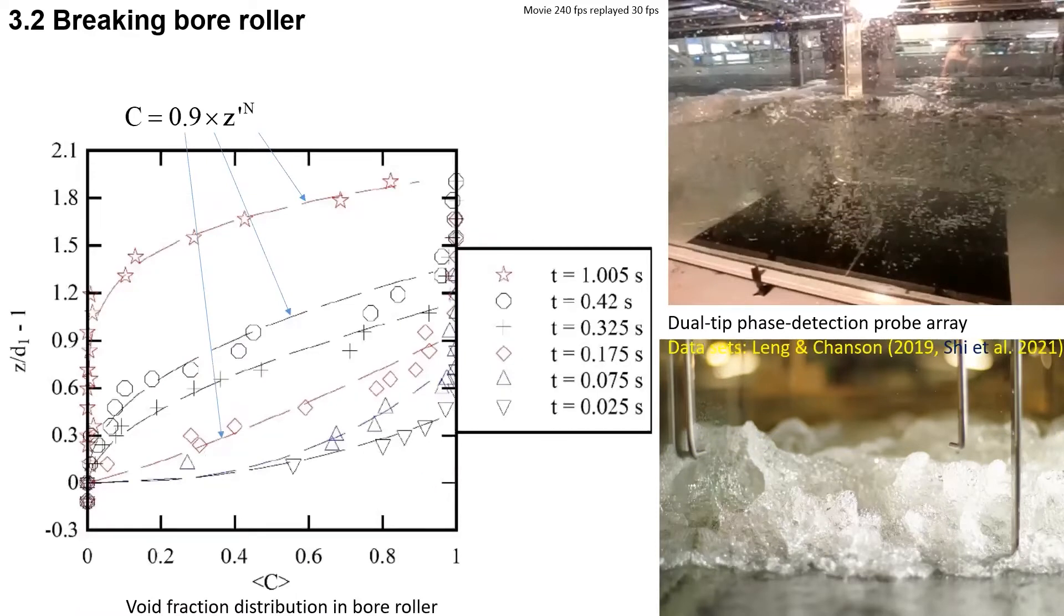For this data set, dimensionless distributions of void fraction are shown on the bottom graph at various times since the first detection of the bore roller at a given Eulerian location. The data are compared with the analytical solution for different times.